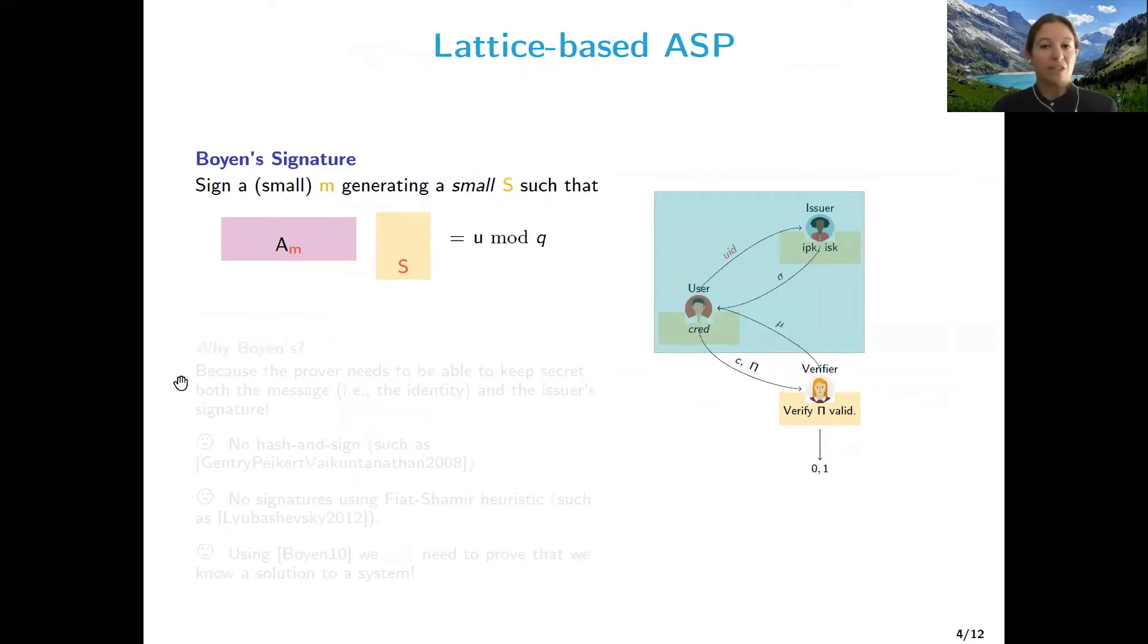So we're interested in doing anonymous signing protocols for lattices, based on lattices. So first of all, we will need a signature. And a signature, we chose Boyan's signature, which works as follows. So given a small M, which is a message, we want to generate the signature and the signature is a short vector S.